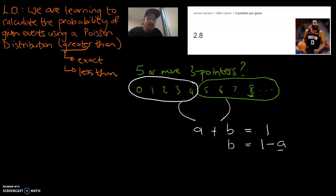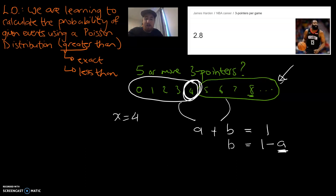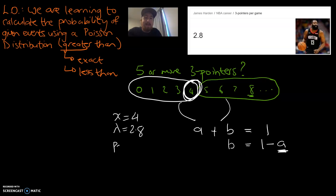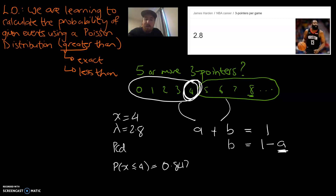So to find group B, what we're actually going to do is go one minus group A. We're interested in this group, and that means four is actually the x value we're interested in. Our calculator won't do the green area, but it will do the bottom portion. Our lambda is going to be 2.8. And because we're interested in 1, 2, 3, 4, the cumulative function is what we need — we're going to be using the PCD function. The probability of there being four or less three-pointers in that game: x is 4, lambda is 2.8 — that's going to be 0.8477. So 85% of the time he'll be scoring four or less.